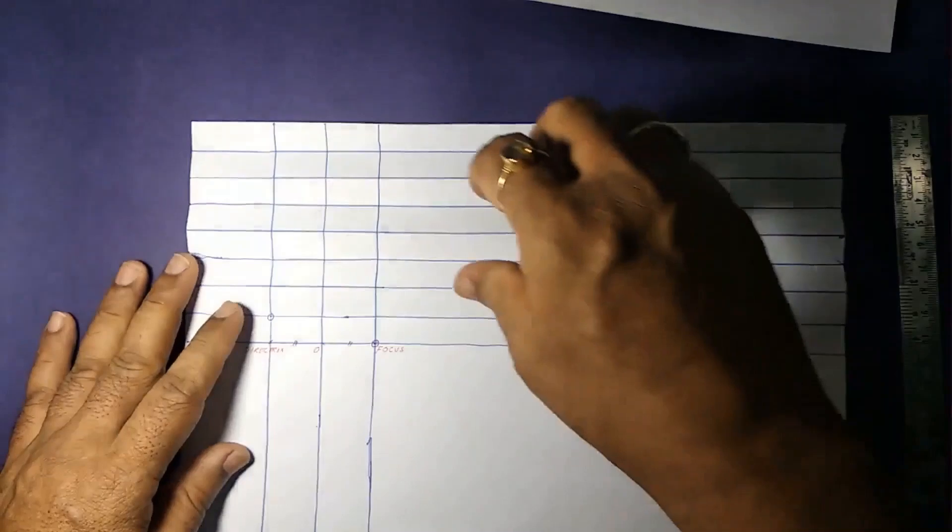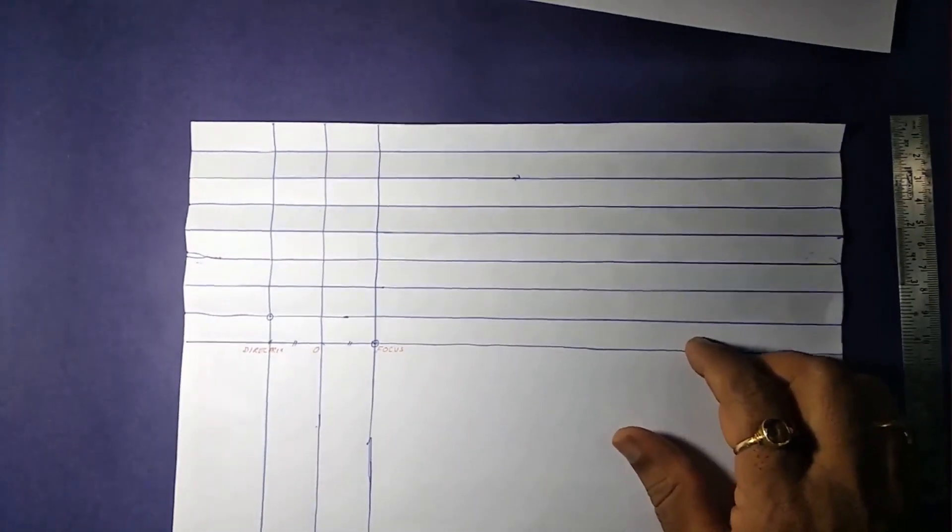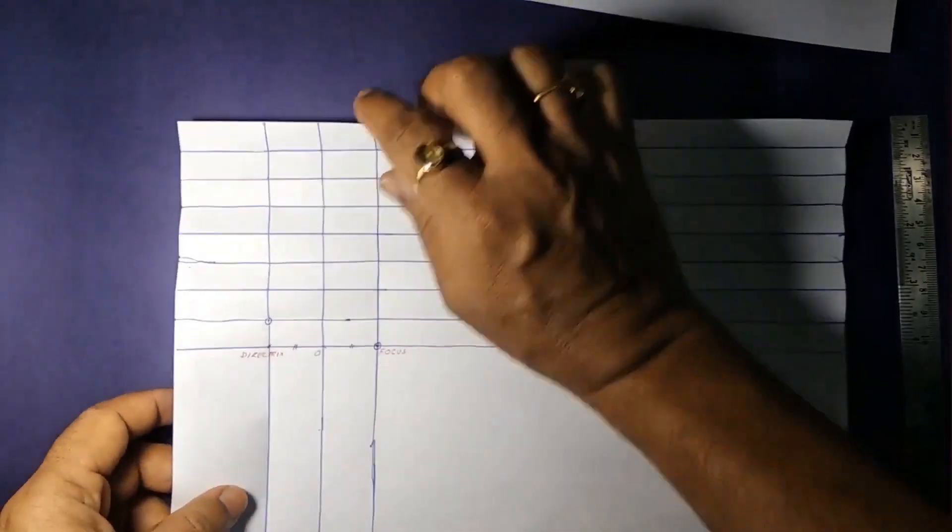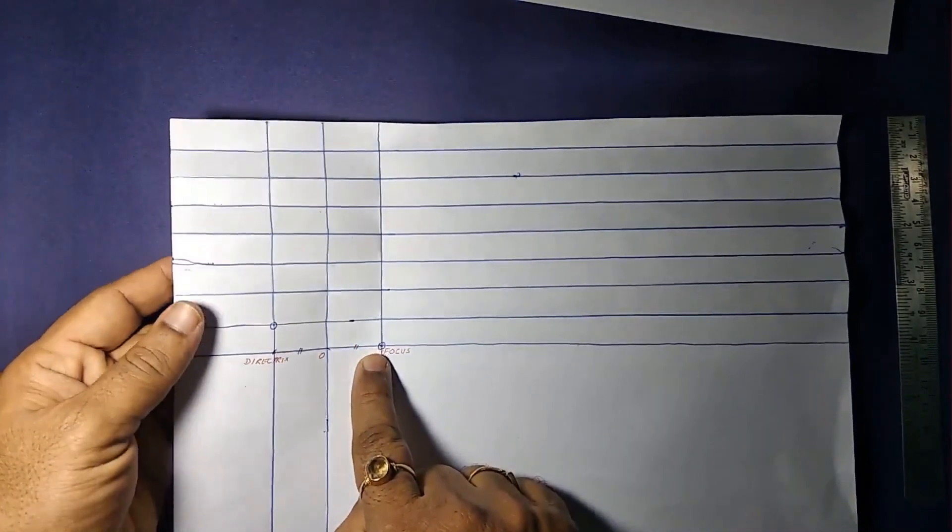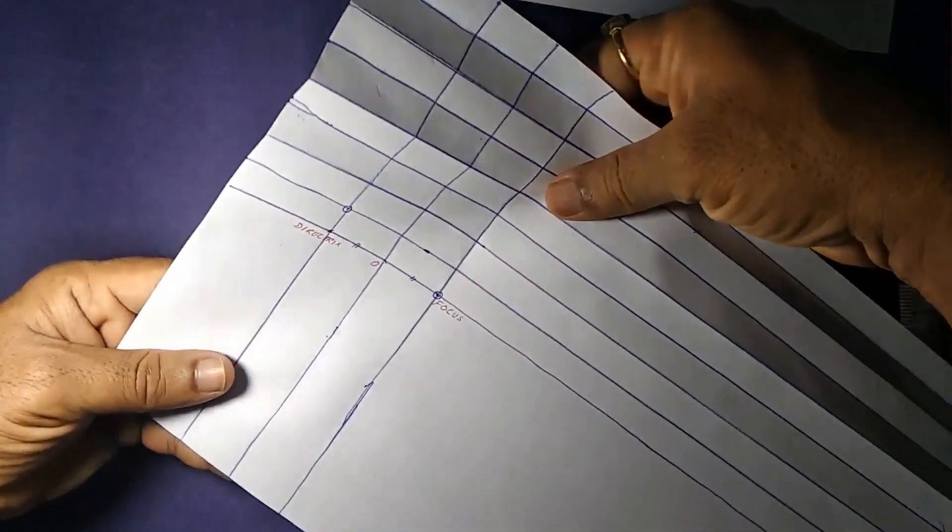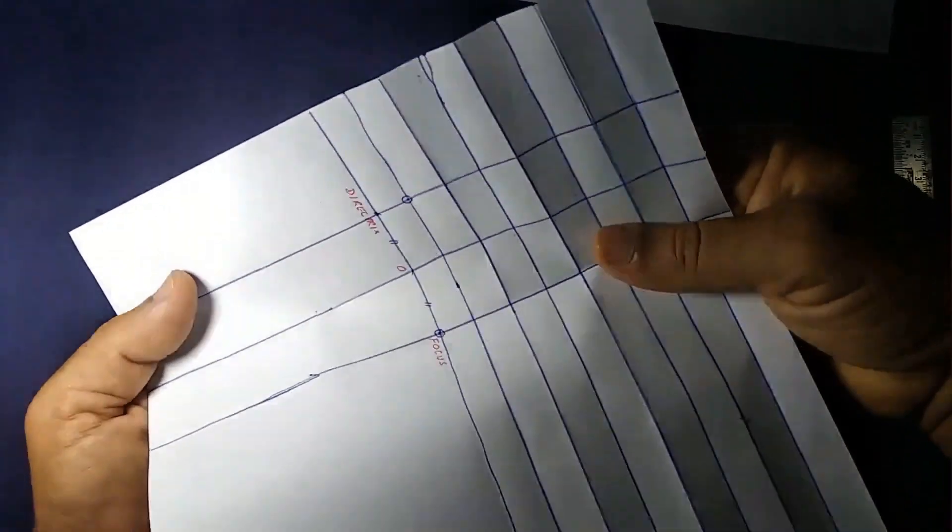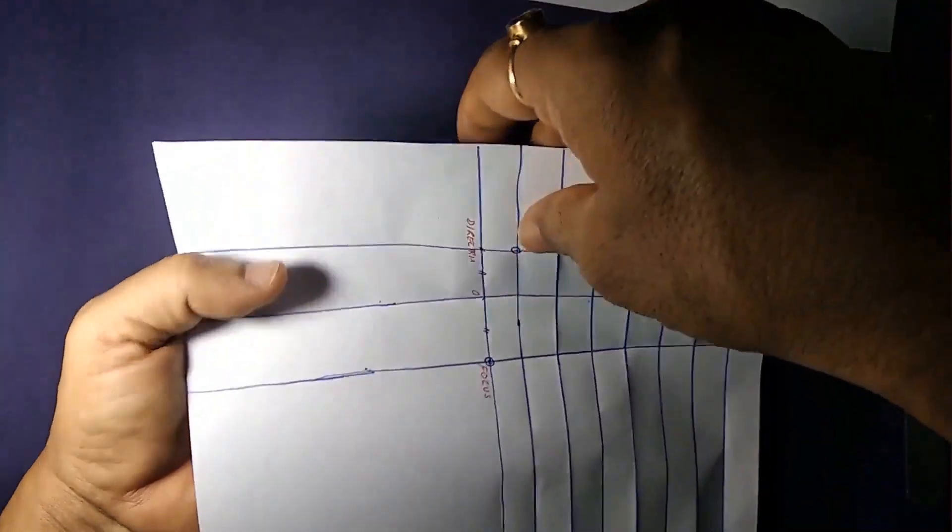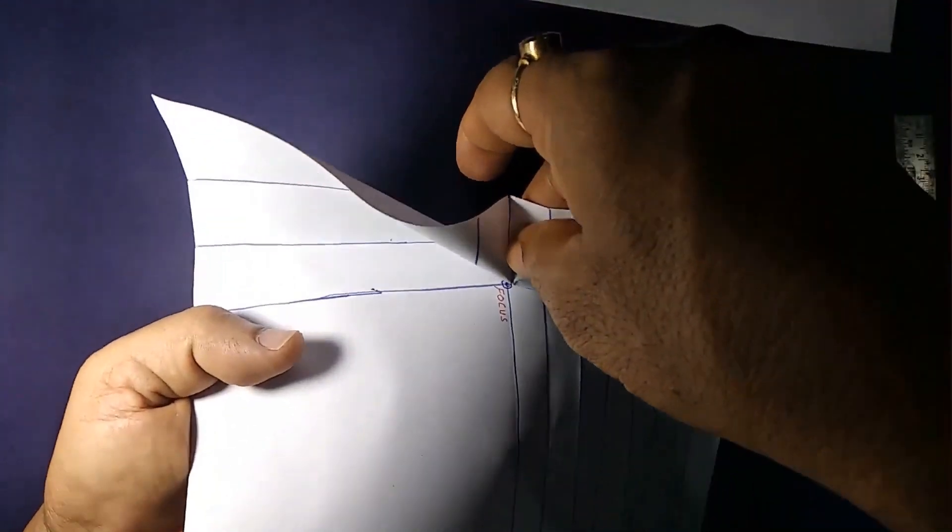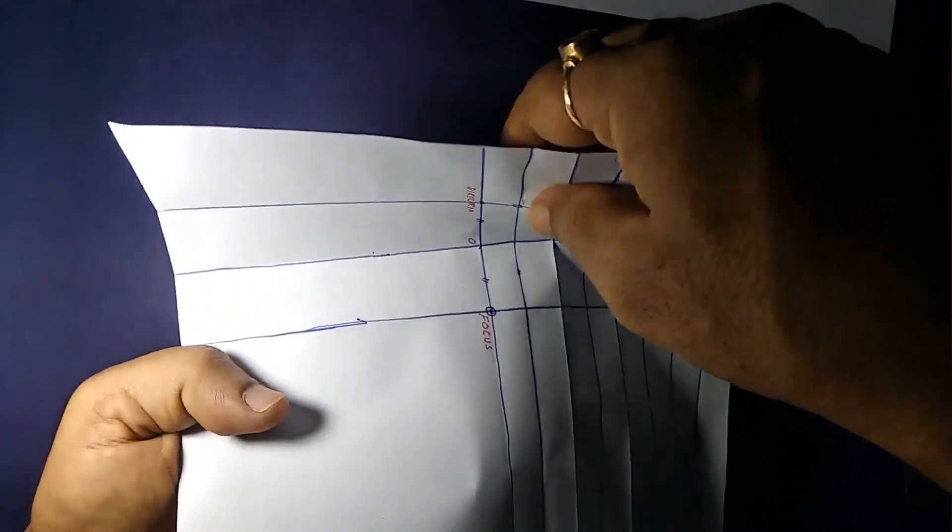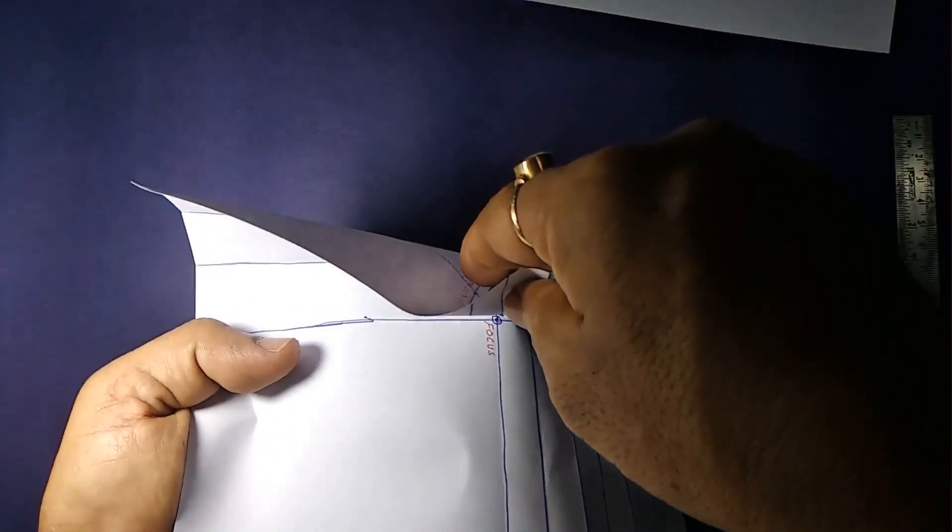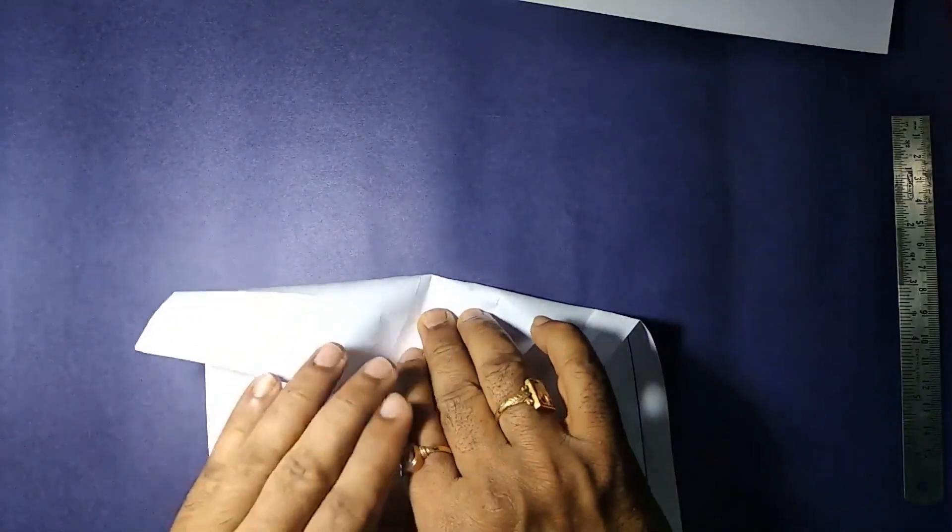Let us make a crease, a fold or a line by overlapping this new point on this directrix onto the focus. And see that they are exactly overlapping on one another. And form the crease.